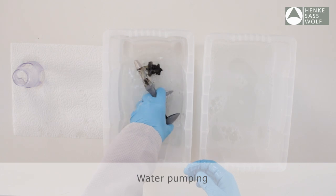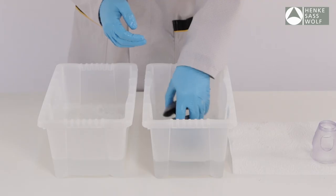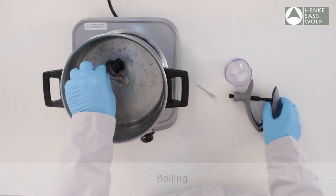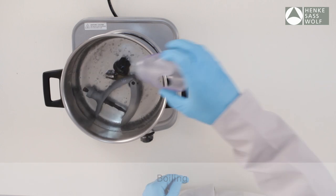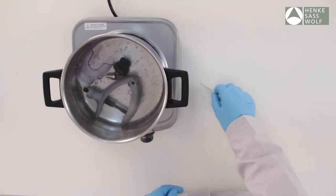To clear the blockage, submerge the syringe in clean water and pump vigorously 10 to 20 times to clear. If this does not help, boil the syringe for 20 minutes, then pump through clean water. This should help loosen any blockages.